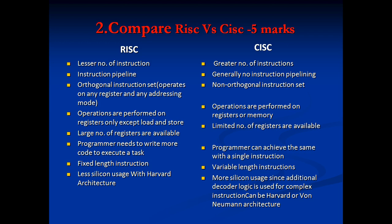In RISC, the instruction set operates on any registers and any addressing modes — it has an orthogonal instruction set. In CISC, it is non-orthogonal. In RISC, operations are performed on registers only, except load and store. In CISC, operations are performed on registers or memory. RISC has a large number of registers available; CISC has a limited number.